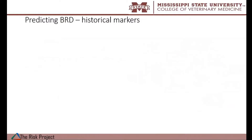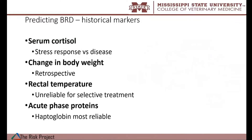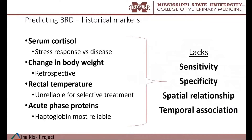As I said previously, we really don't have many biomarkers for predicting BRD prospectively. The four classical indicators used are serum cortisol, change in average daily gains or body weights, rectal temperature, and acute phase proteins — mainly haptoglobin. The problem is that even these historical markers lack diagnostic accuracy and aren't very specific to biological functionality associated with disease. For example, serum cortisol is a stress response — the animal doesn't have to be burdened with respiratory disease to be stressed, leading to many false positives. None of them have spatial or temporal associations with the disease process, meaning they won't tell us what stage of disease the animal is in.